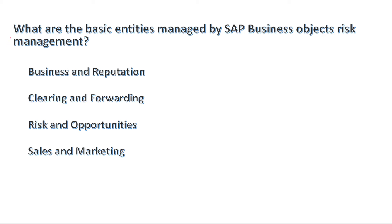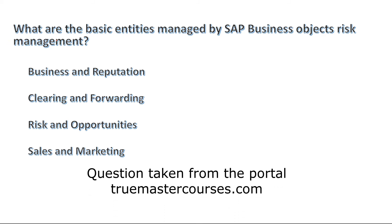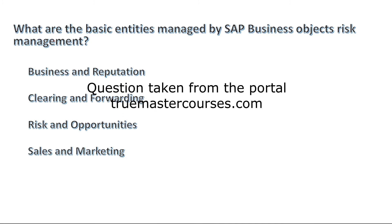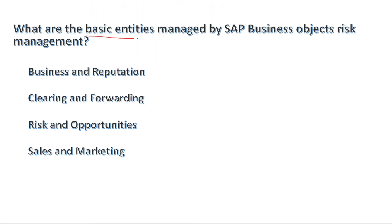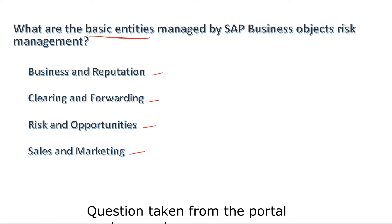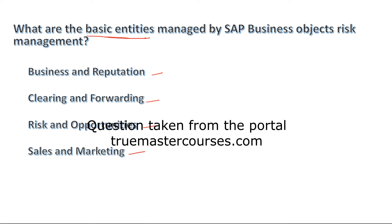Let's try to answer this question: what are the basic entities managed by SAP Business Objects Risk Management? The answer choices are: first, business and reputation; second, clearing and forwarding; third, risk and opportunities; fourth, sales and marketing. Give this a minute and try to come up with an answer choice.